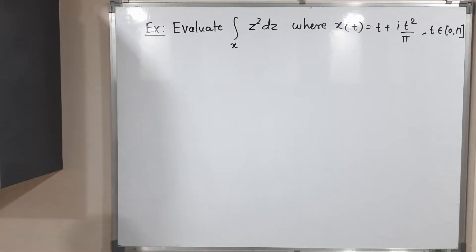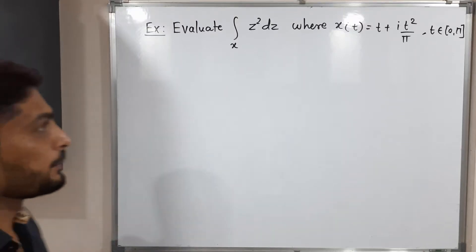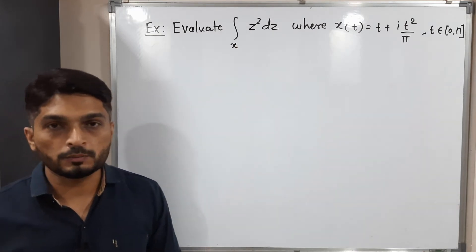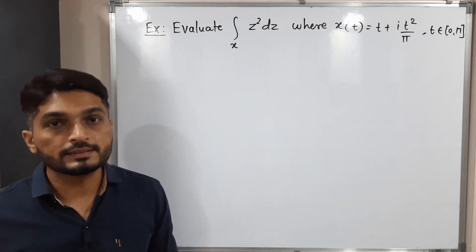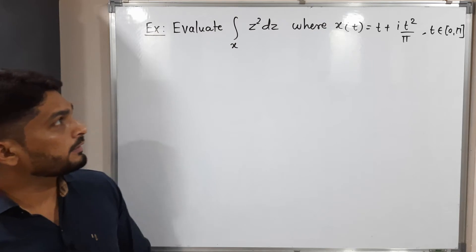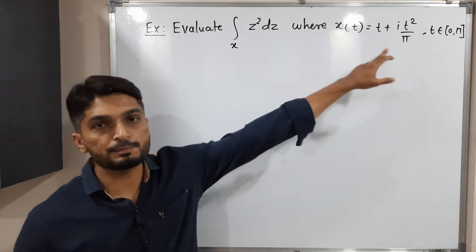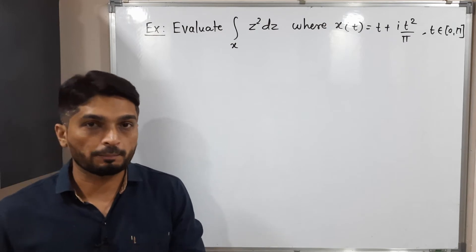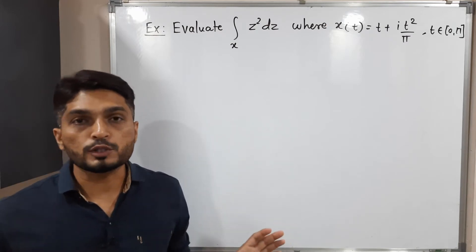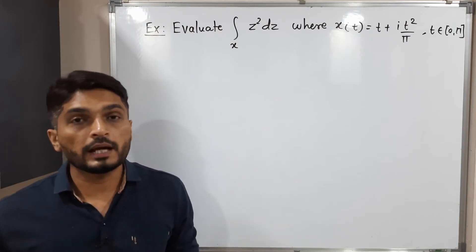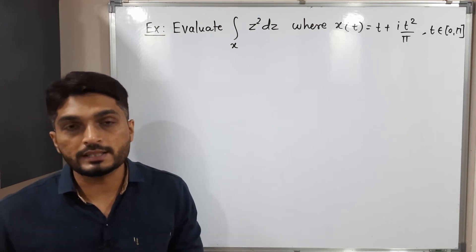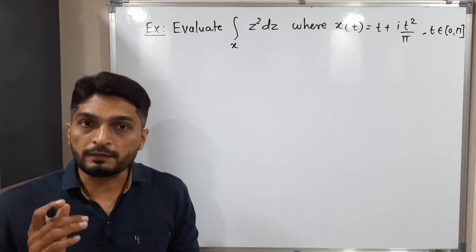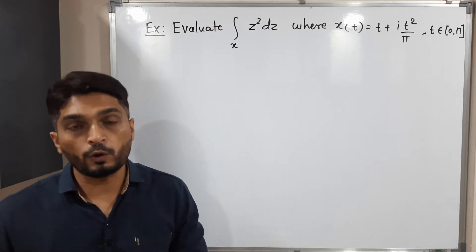Hi everyone, let us discuss this example. In this example we have to find the value of this integration — integration over X of Z square dZ — where X is a curve with a given parameterization, T belonging to the closed interval 0 to 5. We can directly solve this problem, but here we are going to solve it with the help of primitives, or anti-derivatives.